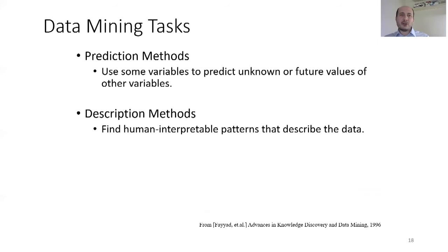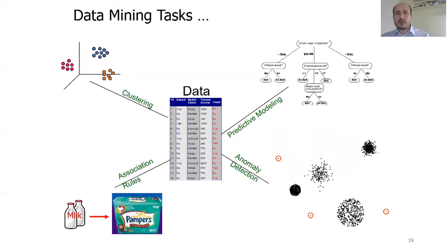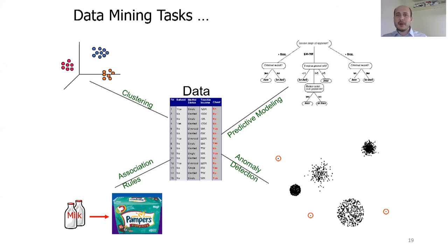There are mainly two different tasks in data mining. The first is prediction — using some variables to predict unknown and future values of other variables. The other task is description — finding human-interpretable patterns that describe the data. Four application areas of data mining are: predictive modeling, clustering, association rules, and anomaly or outlier detection.